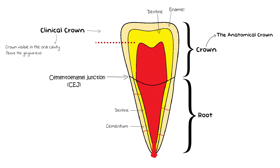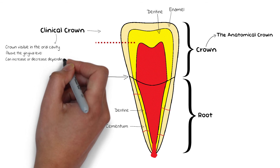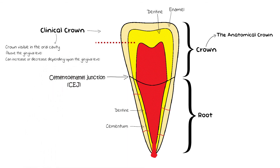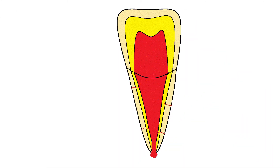The clinical crown can increase or decrease depending upon the gingival level. As the gingiva recedes, the clinical crown will also increase in size. I will explain why this is important later on. For now, let's understand this basic concept before moving on to the core or the pulp of the tooth.